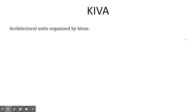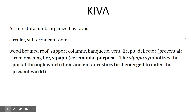One of the important parts of the organizational structure of Cliff Palace is something called a kiva. A kiva is a circular, subterranean room used for religious ritual. It would have had a wood-beamed roof — you'll see a picture in a moment, but the roof would have been removed so you can look into it.